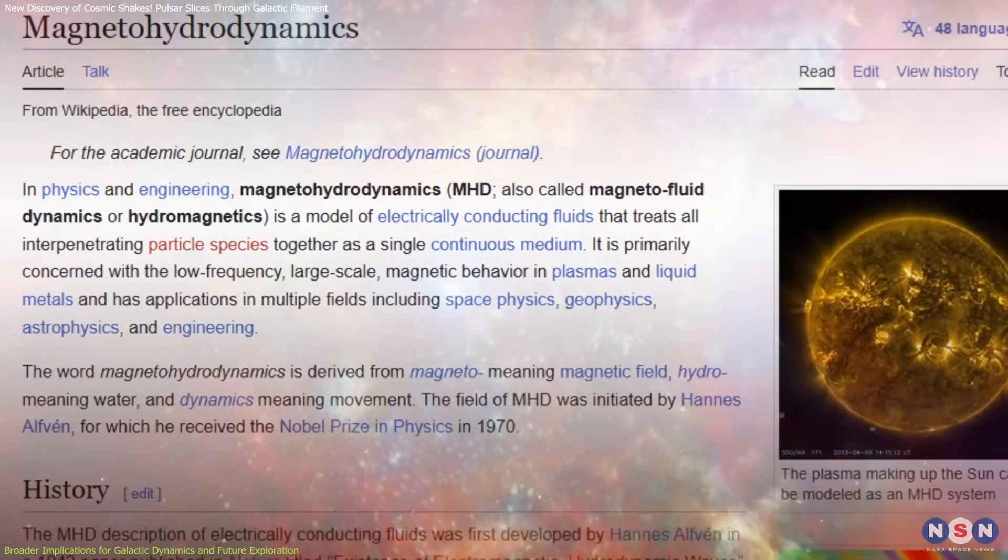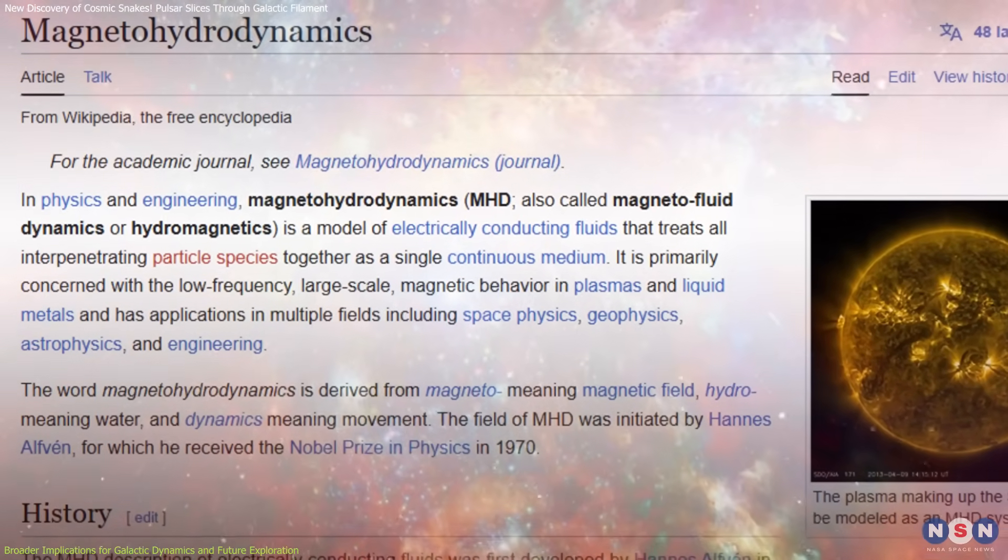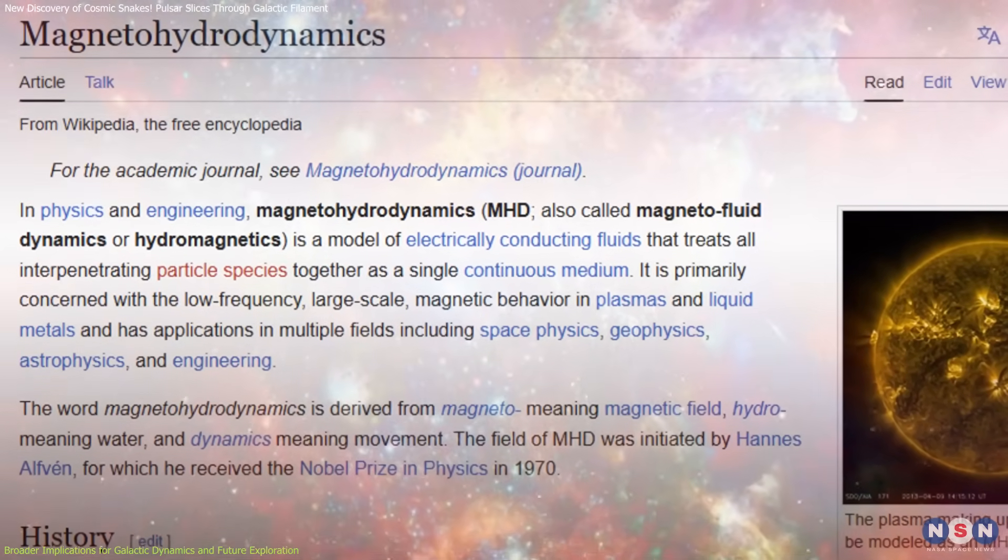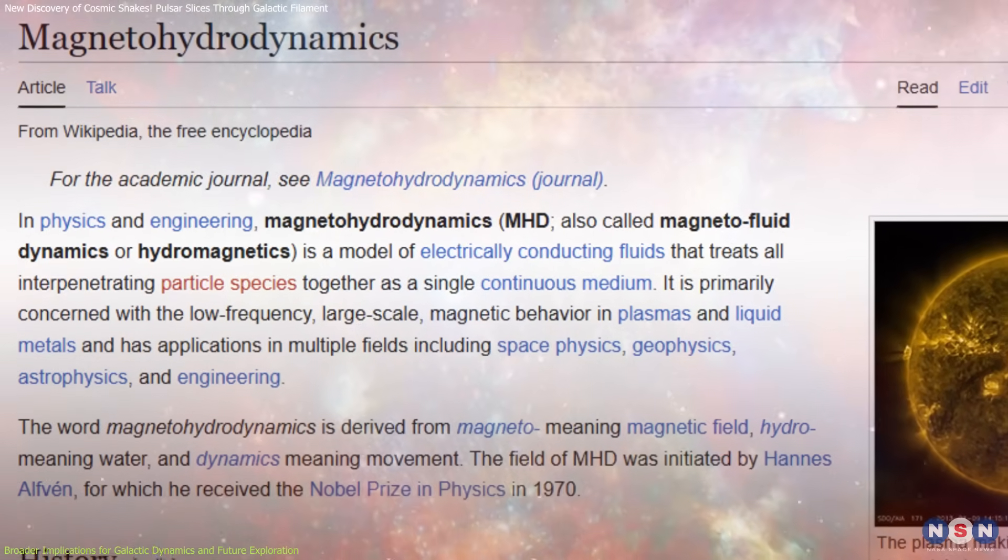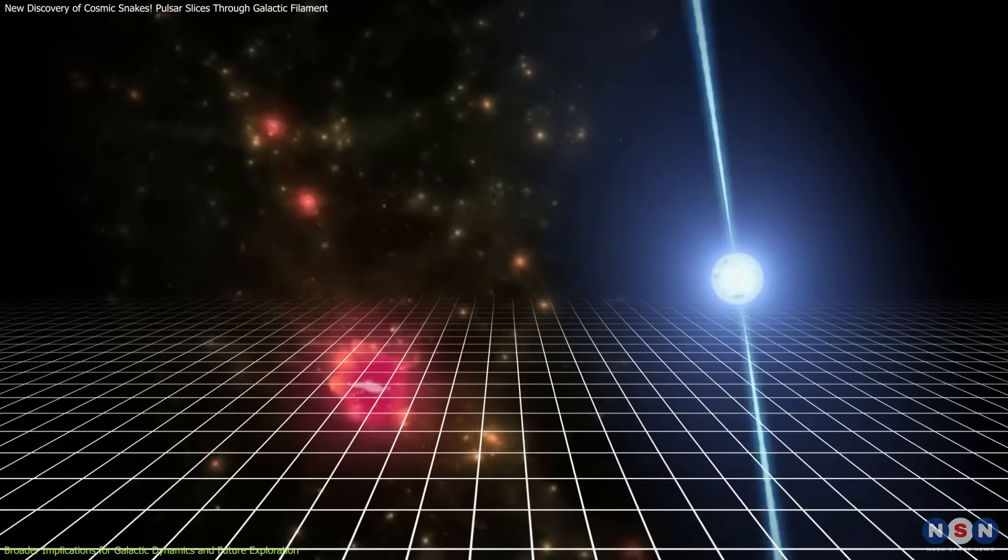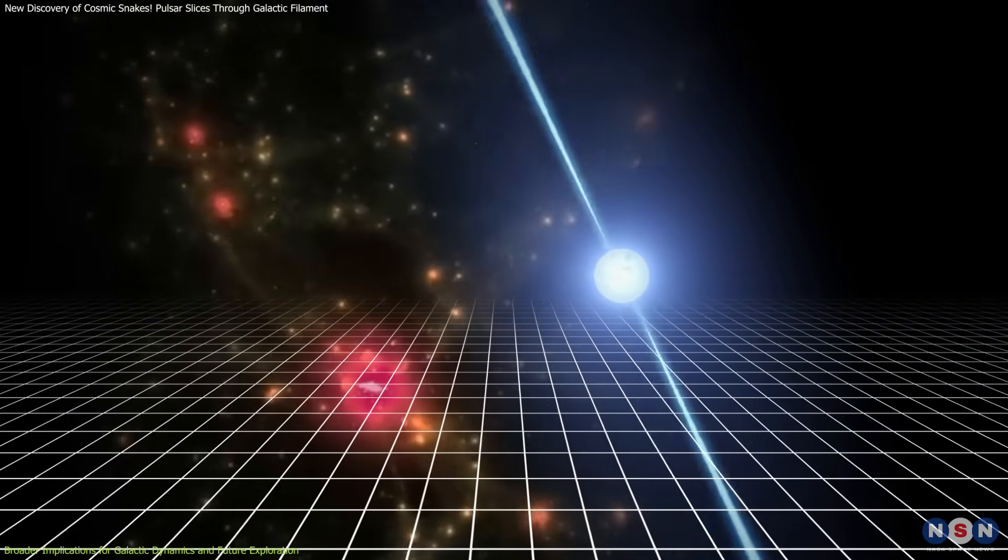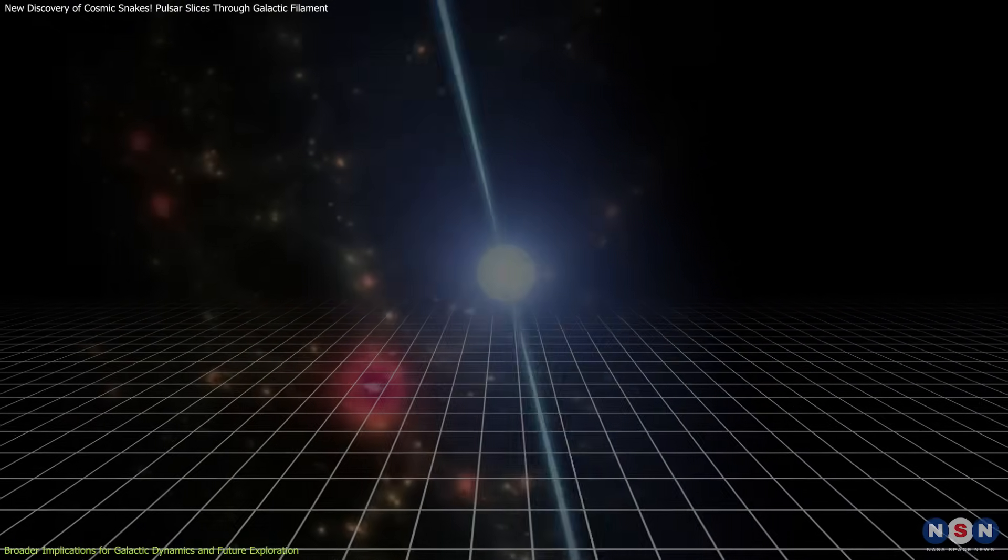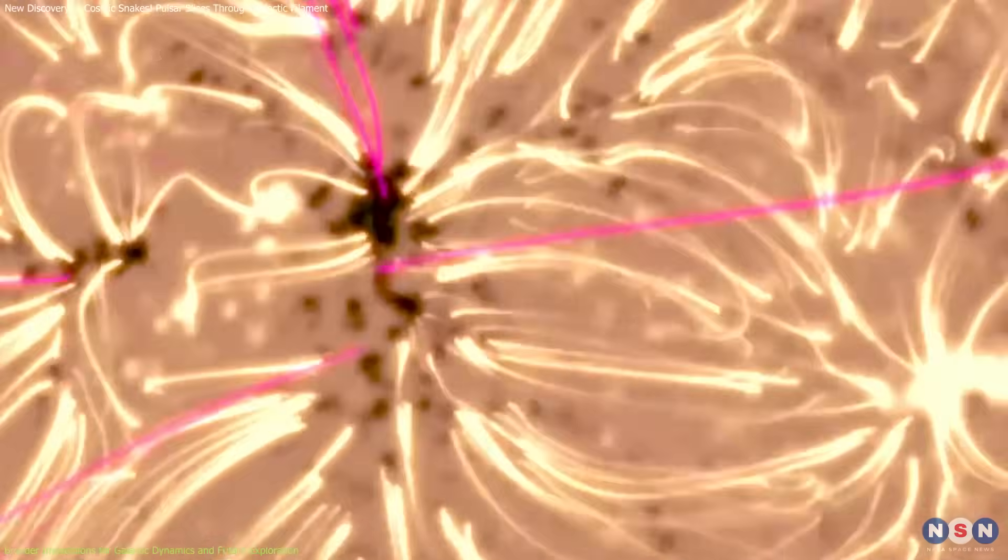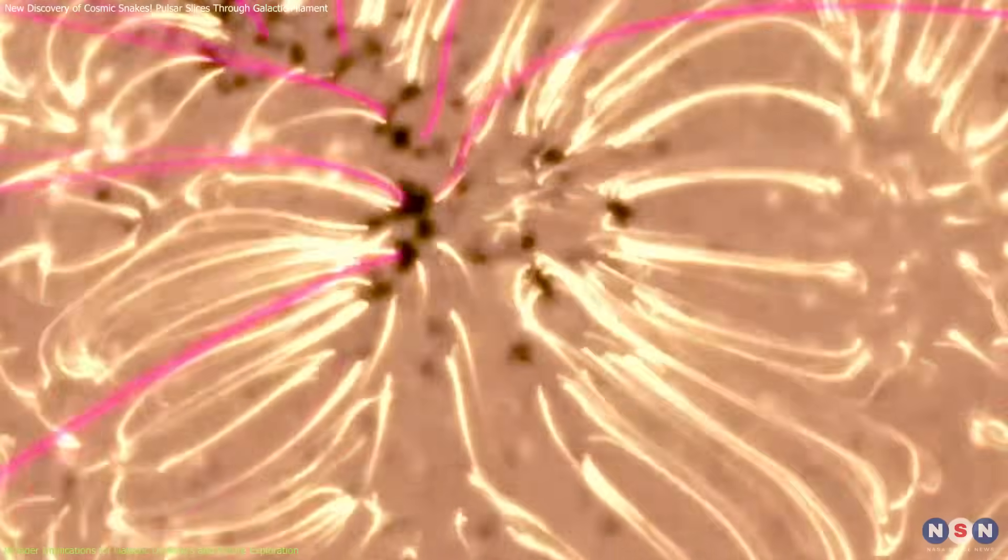To explain these interactions, scientists turn to magnetohydrodynamics (MHD), the physics of how magnetic fields and ionized gases behave together. According to MHD, when a fast-moving object like a pulsar disrupts a magnetic filament, it can trigger magnetic reconnection, a process where tangled magnetic field lines snap and realign, releasing bursts of energy.